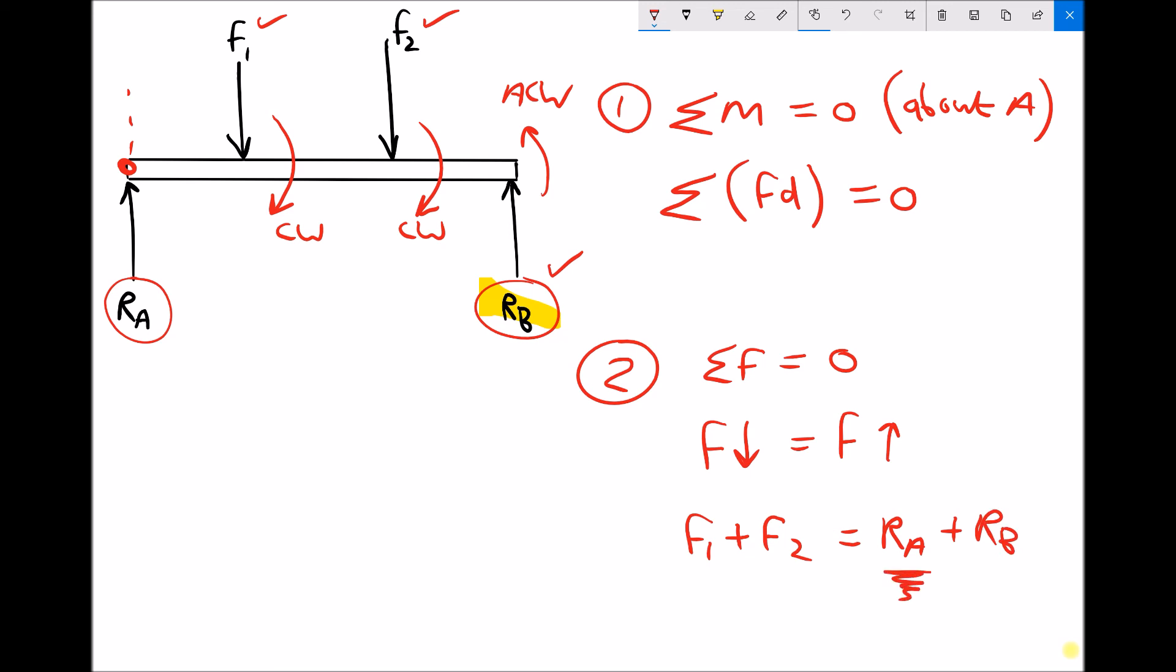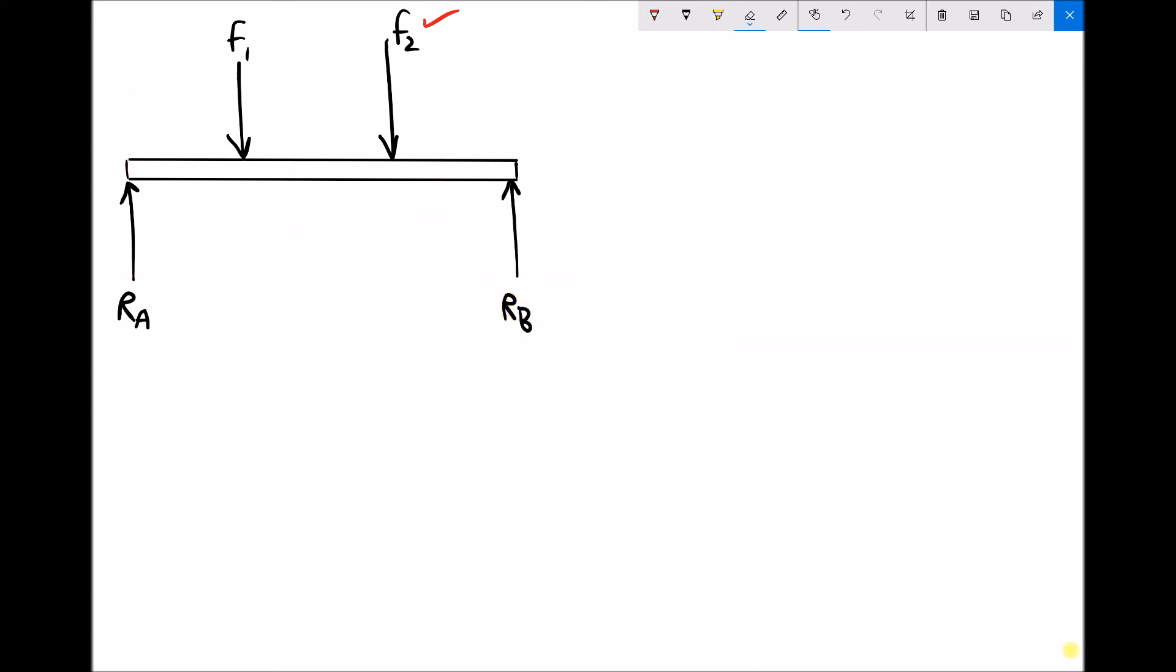There is just one more thing that's worth mentioning before we look at some specific examples. This relates to the end conditions at point A and point B. All we've shown them here is arrows to represent the forces, but what we have is we have different end conditions.